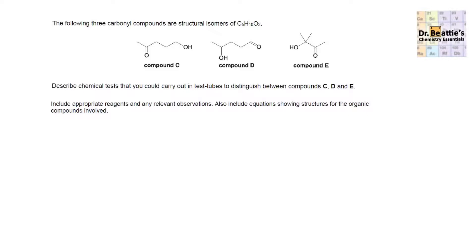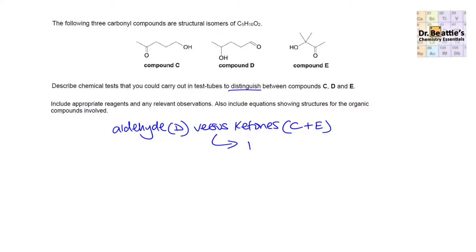The first thing is to identify the functional groups in compounds C, D, and E. Go into the exam, highlight the functional groups on each molecule, then work out how to distinguish between the compounds. Compounds C and E have ketones in them, whereas compound D has an aldehyde — so a test should come straight to mind. That test is Tollens reagent. You could also consider potassium dichromate, however the other functional groups would interfere: compound C has a primary alcohol that would be oxidised with potassium dichromate, giving a false result. Only Tollens reagent works here because it is specific to aldehydes only.